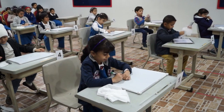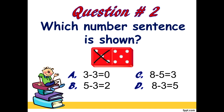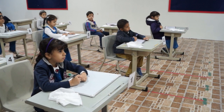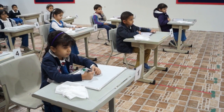Question number 2. Which number sentence is shown? A, 3 minus 3 equals 0. B, 5 minus 3 equals 2. C, 8 minus 5 equals 3. Or D, 8 minus 3 equals 5? Again, which number sentence is shown? Ready? Go.